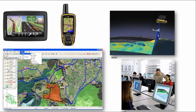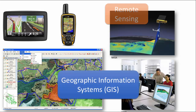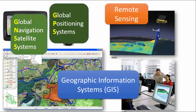Recall from the lecture two introductory video that geospatial technology is the trifecta of geographic information systems, remote sensing, and global navigation satellite systems, also known as global positioning systems in America. We are going to take a look at how all of these work together.